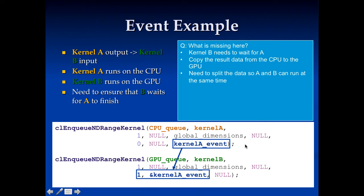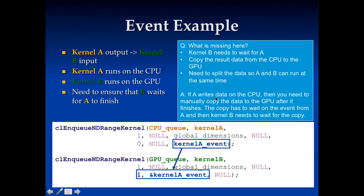Looking at this in more detail, what's missing is that we also need to copy the data from the CPU to the GPU. Kernel A runs on the CPU and kernel B runs on the GPU, so when kernel A finishes, we need to copy its data from the CPU to the GPU. What we really need is: enqueue kernel A and get an event back, then enqueue a copy operation that waits for that event, then enqueue kernel B that waits on the copy event. So we need to explicitly move the data and make sure we do that in a synchronized manner.